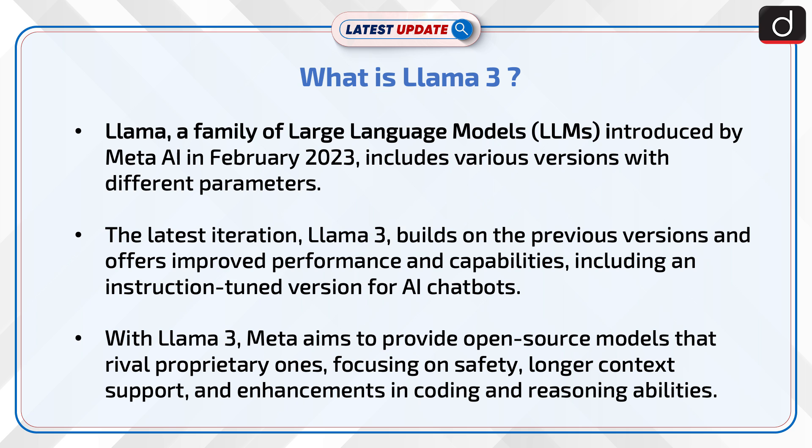The latest iteration, LAMA 3, builds on the previous versions and offers improved performance and capabilities, including an instruction-tuned version for AI chatbots. With LAMA 3, Meta aims to provide open source models that rival proprietary ones, focusing on safety, longer context support, and enhancements in coding and reasoning abilities.